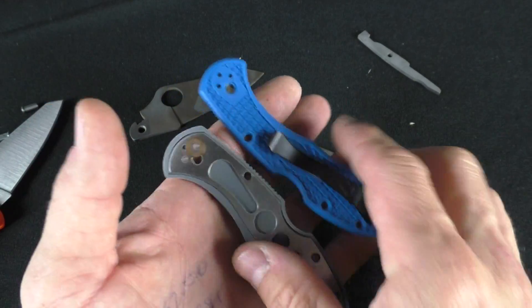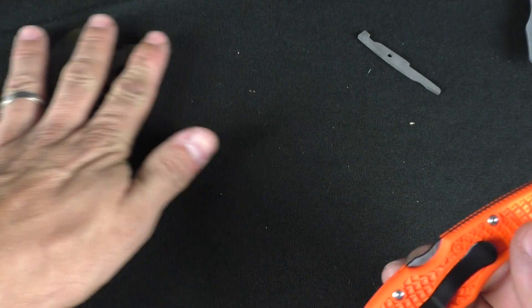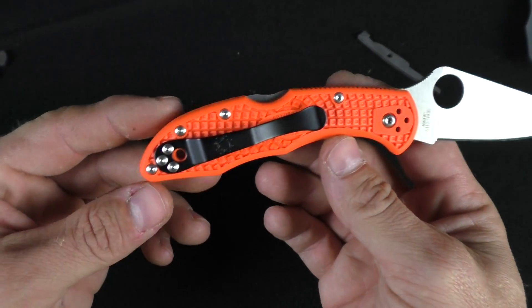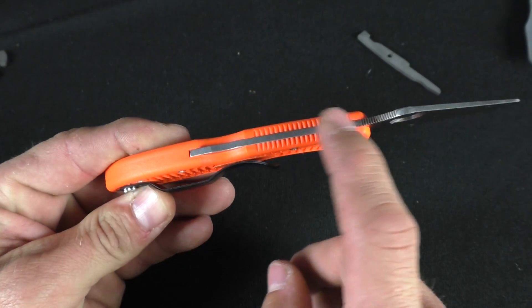You do need a T6 and a T8 to disassemble a Spyderco Delica. The T8 is for the pivot here, and the T6 is going to be for your handle screws. The handle screws are all identical.